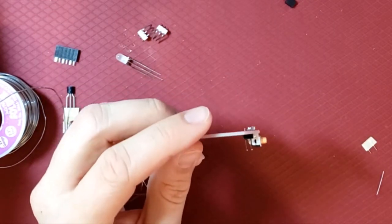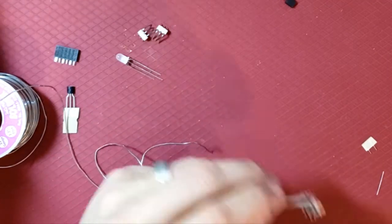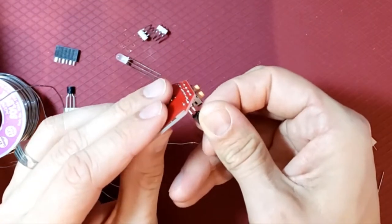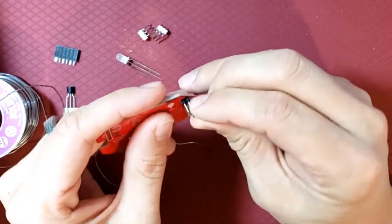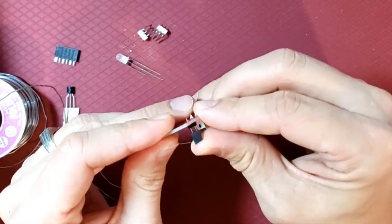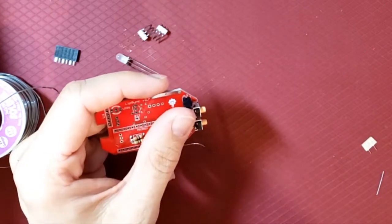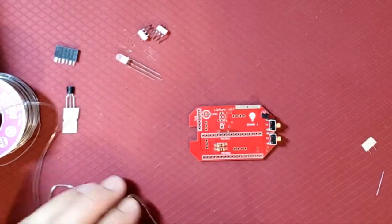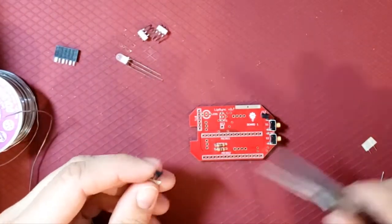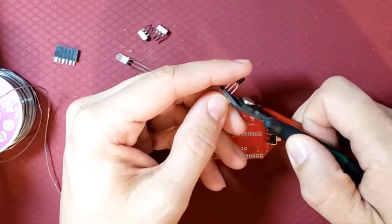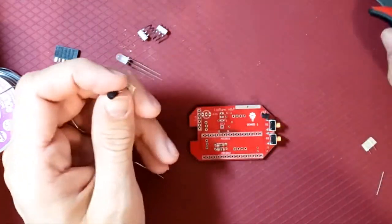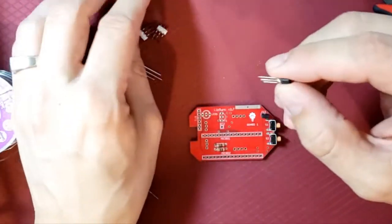These little header pins help us configure the Bluetooth mode. I'll put this little piece on here. I think I'm going to build the Bluetooth version today, so I'll end up taking this off later, but I'll follow the instructions for now.